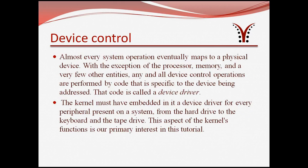Next, let's move on to device control. Almost every system operation eventually maps to a physical device. All device control operations are performed by code that is specific to the device being addressed. The only exceptions are the processor, memory, and a very few other entities. In Linux, every physical device is controlled by specific code called device drivers. The kernel must have embedded in it a device driver for every peripheral present on the system, from the hard disk drive to the keyboard and the tape drive. This aspect of kernel functions is our primary interest in this tutorial.